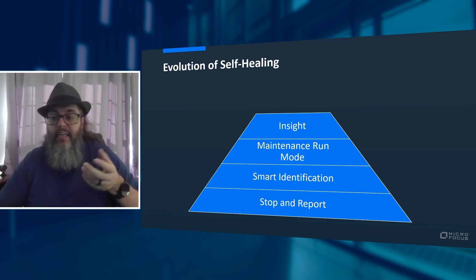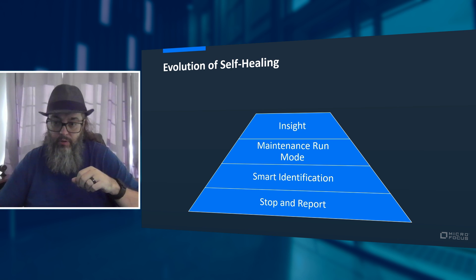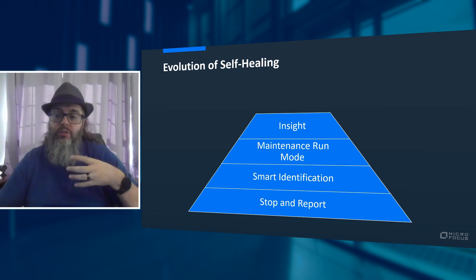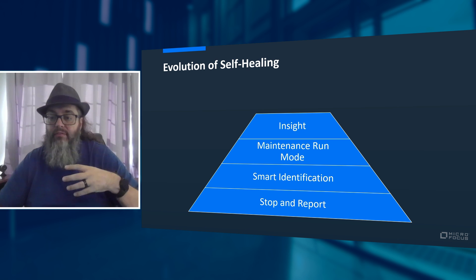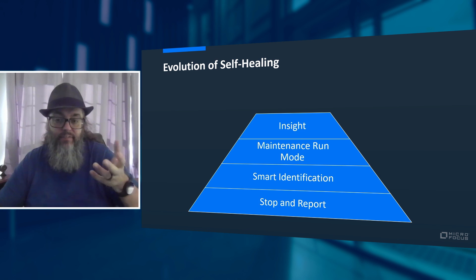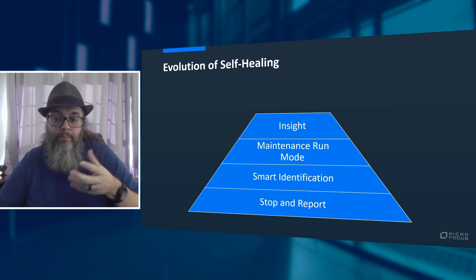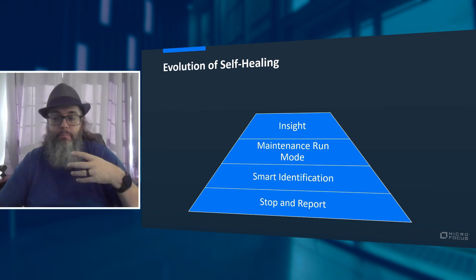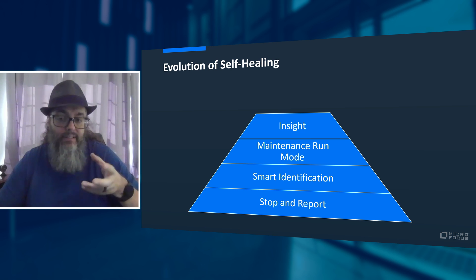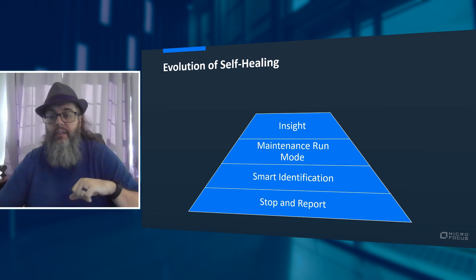Then, in the early 2000s, we introduced a concept called insight mode. Essentially, the user would capture an image of the object, and the tool would scan for what was being displayed to see if that image, pixel by pixel, existed, and then act upon that. We also provided a pixel variance threshold to try to account for minor differences in display settings from one machine to the next.